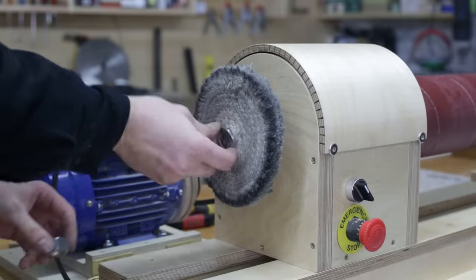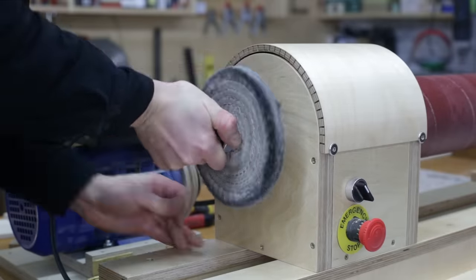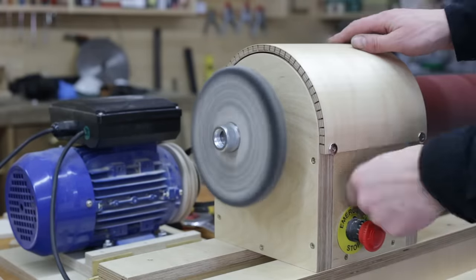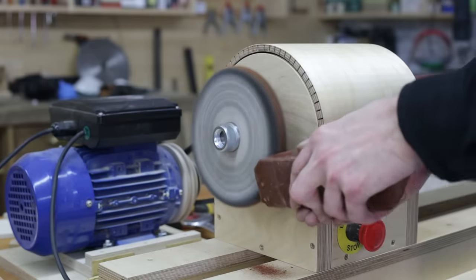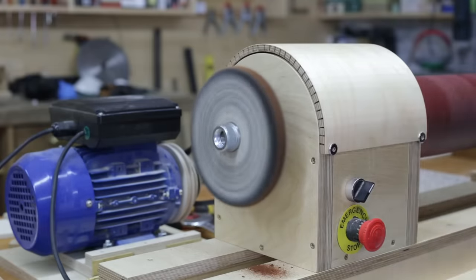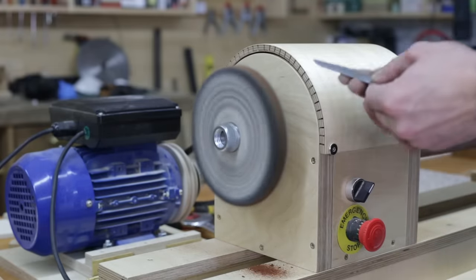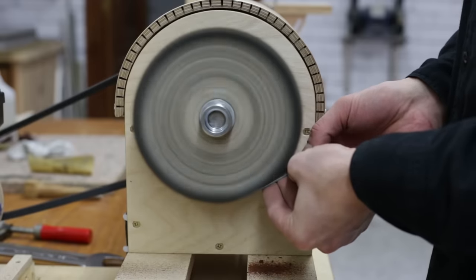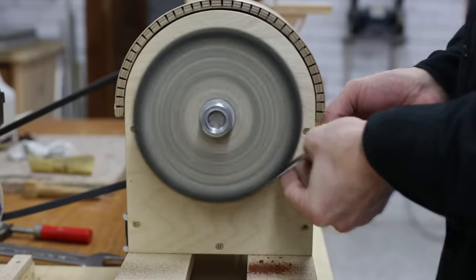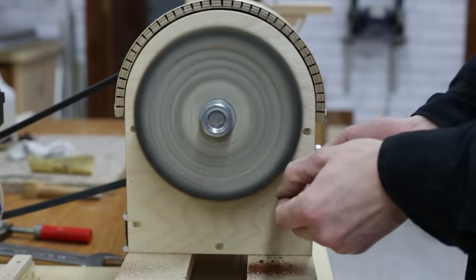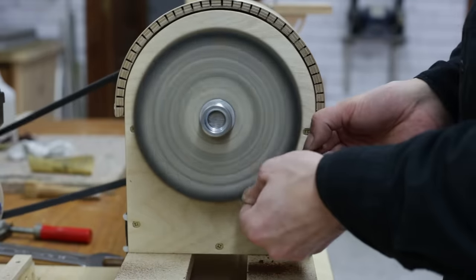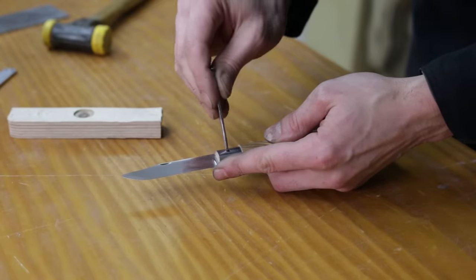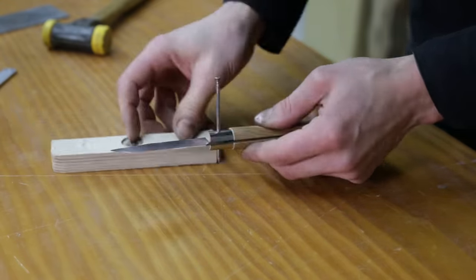I'm going to mount this polishing disc on the lathe shaft, allowing me to obtain a more professional finish. Now all that's left is to assemble all the pieces. I put in the nail that I will use as pivot, and cut off the part that's left over.